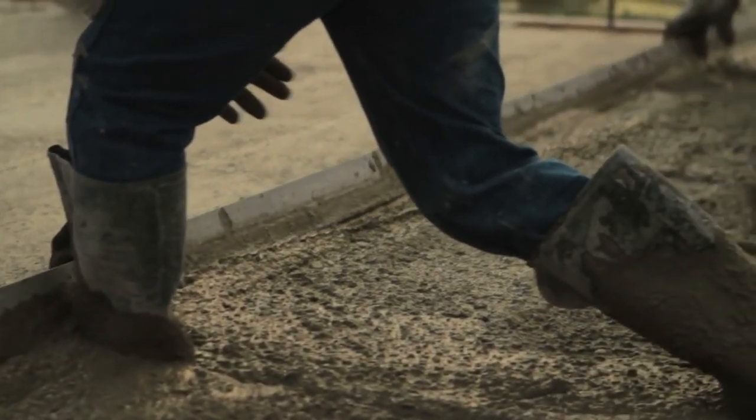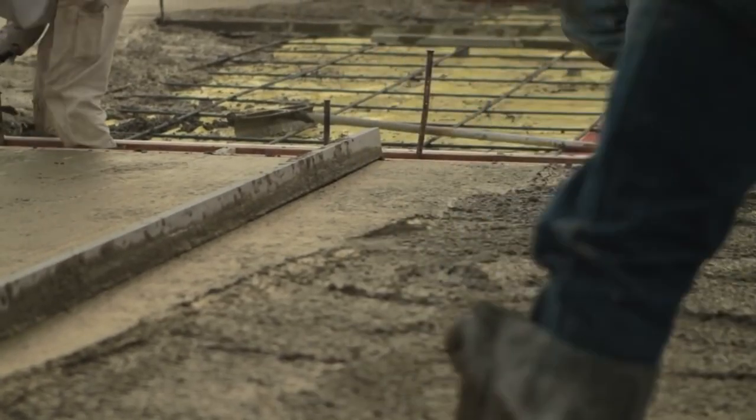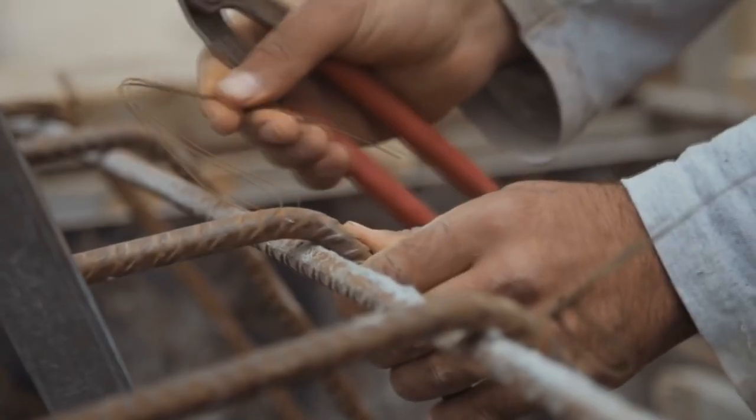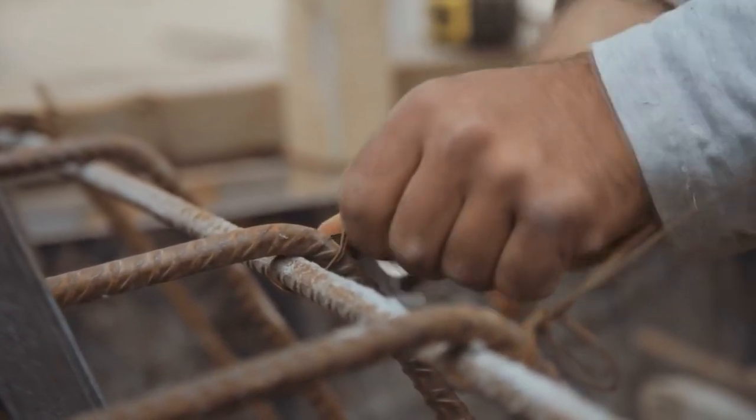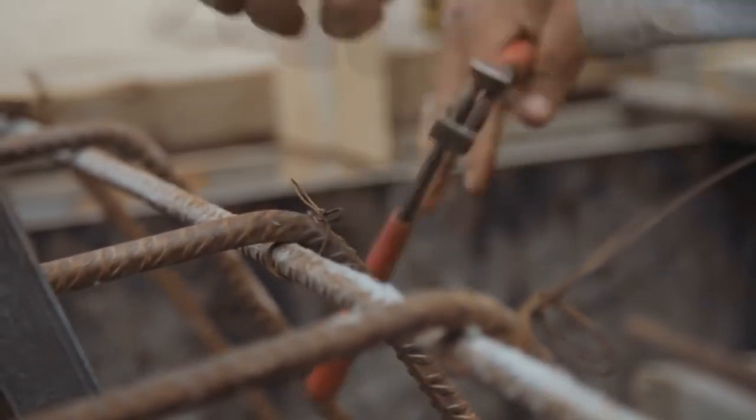The first line of defense is cover. Cover is the minimum distance between the outside surface of the concrete and the reinforcing steel. And depending on exposure and application, certain codes specify different amounts of concrete cover, generally between 25 and 75mm or 1 to 3 inches.